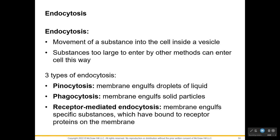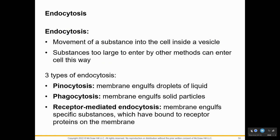Endocytosis is the movement of substances into the cell. Endo means inside; cyto means cell. We're going to move substances into the cell, creating a vesicle that stores or transports material inside the cell. This is for really large substances or mass amounts of substances — think bulk transport. There are three types of endocytosis: pinocytosis (pino means to drink), phagocytosis (phago means to eat), and receptor-mediated endocytosis.